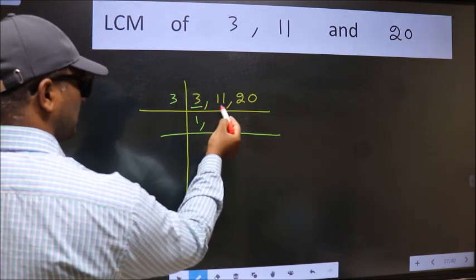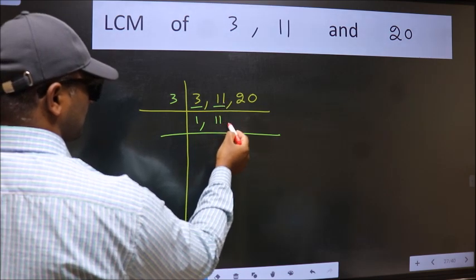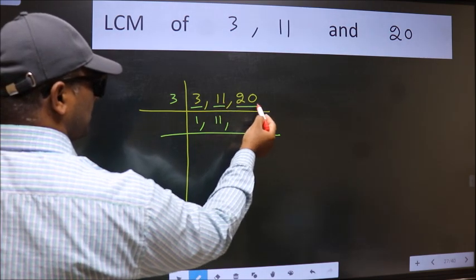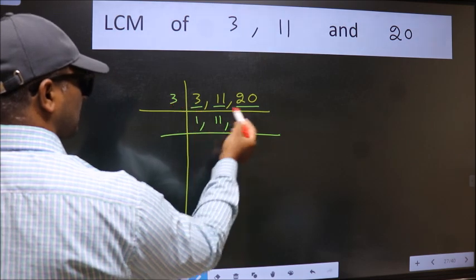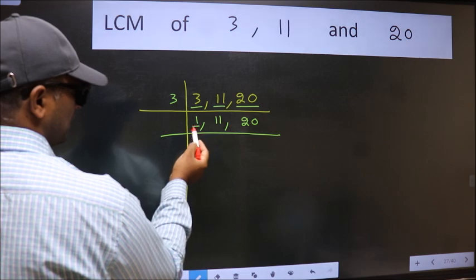The other number 11 not divisible by 3 so we write it down as it is. The other number 20 not divisible by 3 so we write it down as it is. Now we got 1 here.